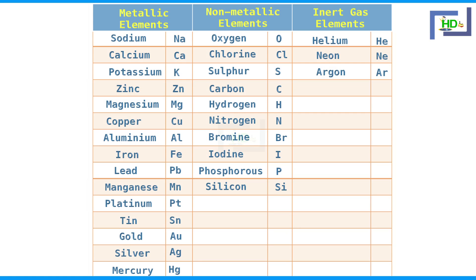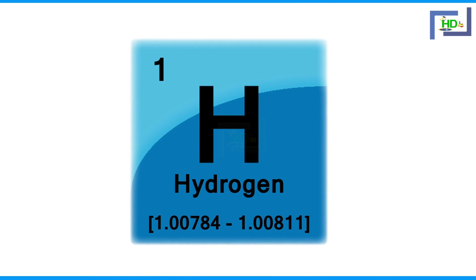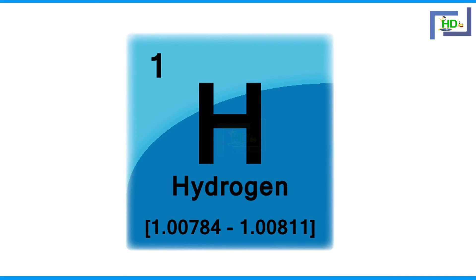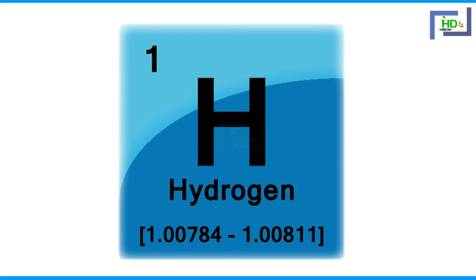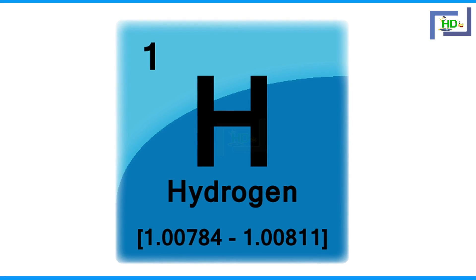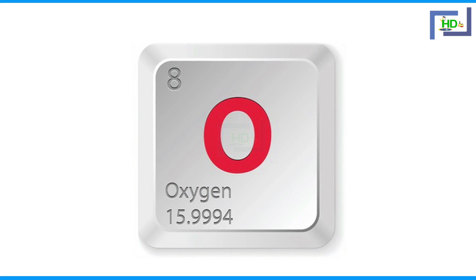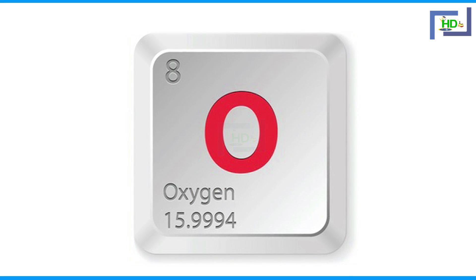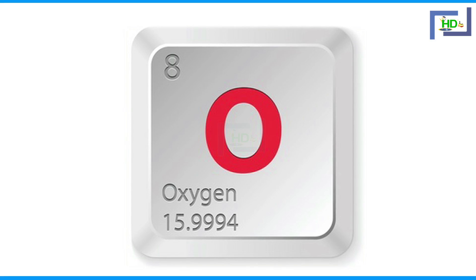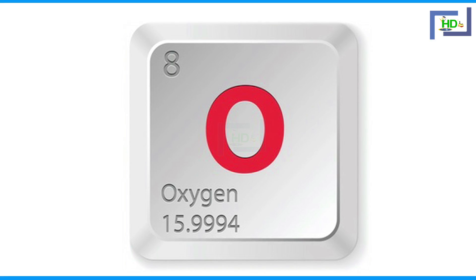Now, what does a symbol represent? What information does it give? A symbol conveys very useful information about the element it represents. For example, H is used for the element hydrogen — the symbol H represents one atom of hydrogen. Similarly, O is used for element oxygen — the symbol O represents one atom of oxygen.